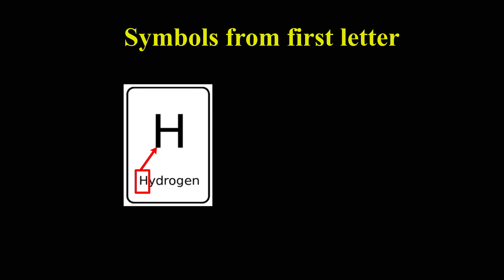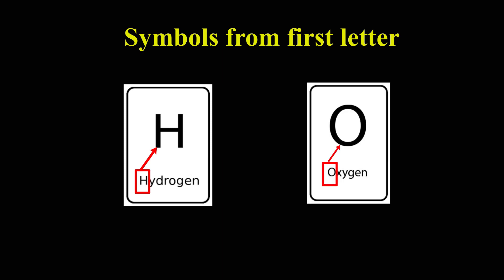Let's see few symbols which are derived from first letter of element's English name. Hydrogen element's symbol is H. H is the first letter of element name. Oxygen element's symbol is O. O is the first letter of element name. Notice that H and O are written in capital letter.